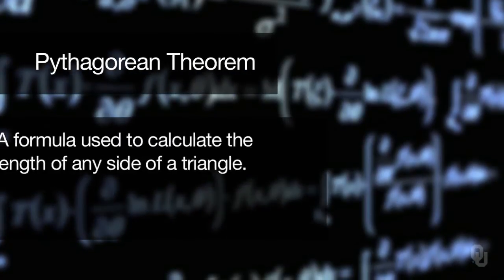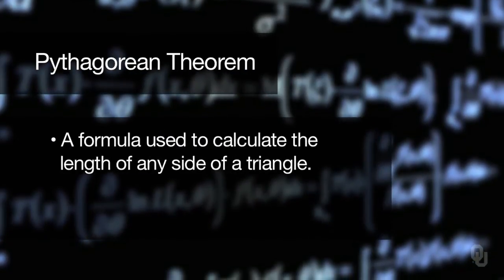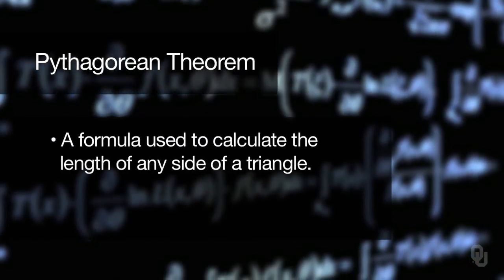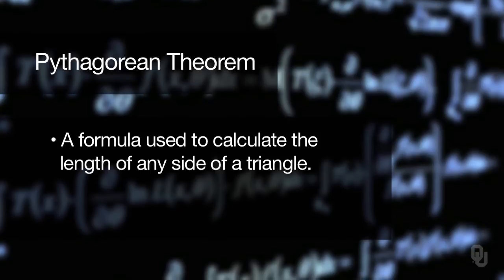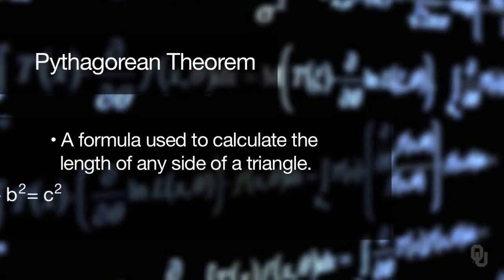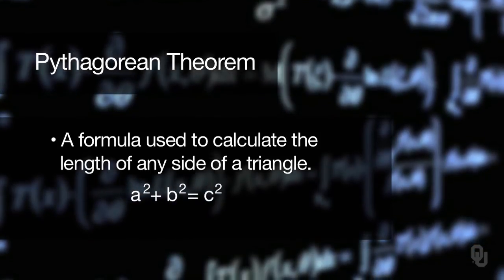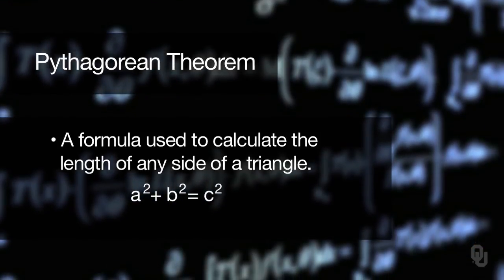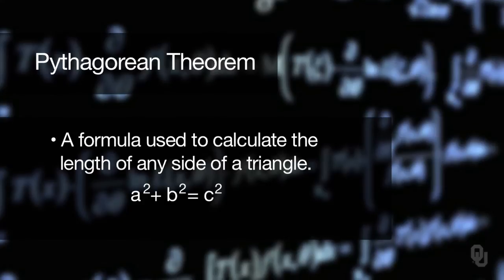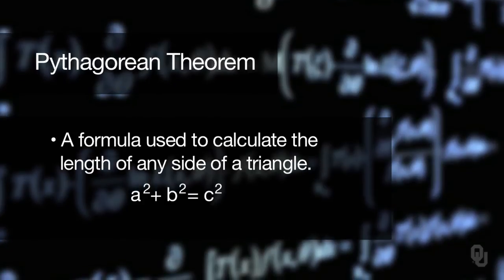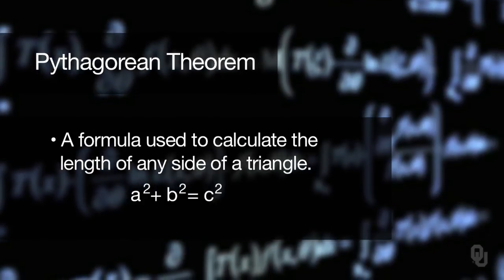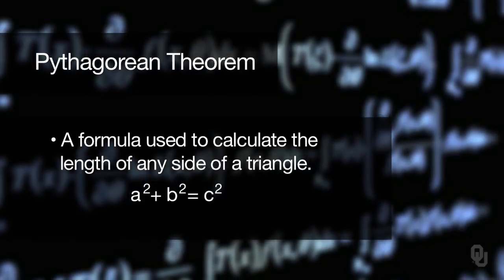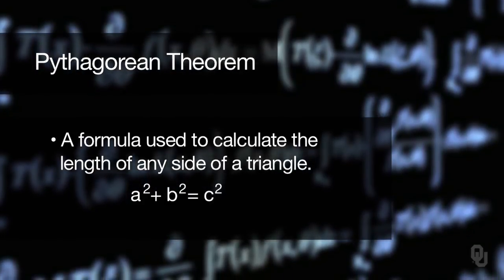Another example is the Pythagorean theorem, which tells you the length of any side of a triangle if you know the other two sides — A squared plus B squared equals C squared. That looks like a formula, and it really is, but it's also another example of pseudocode and a way of expressing an idea in a language-independent manner.